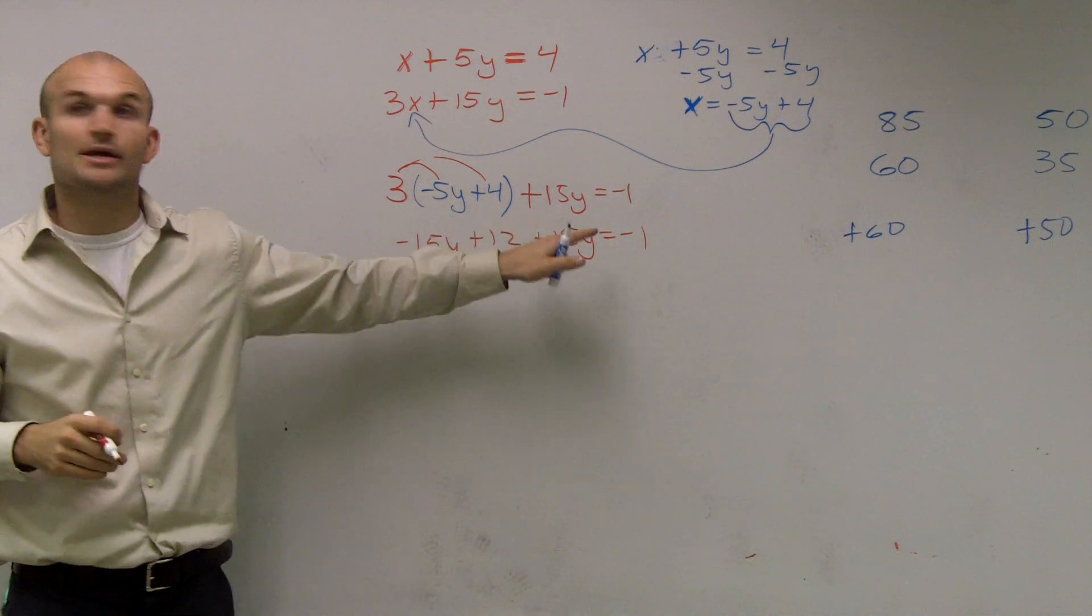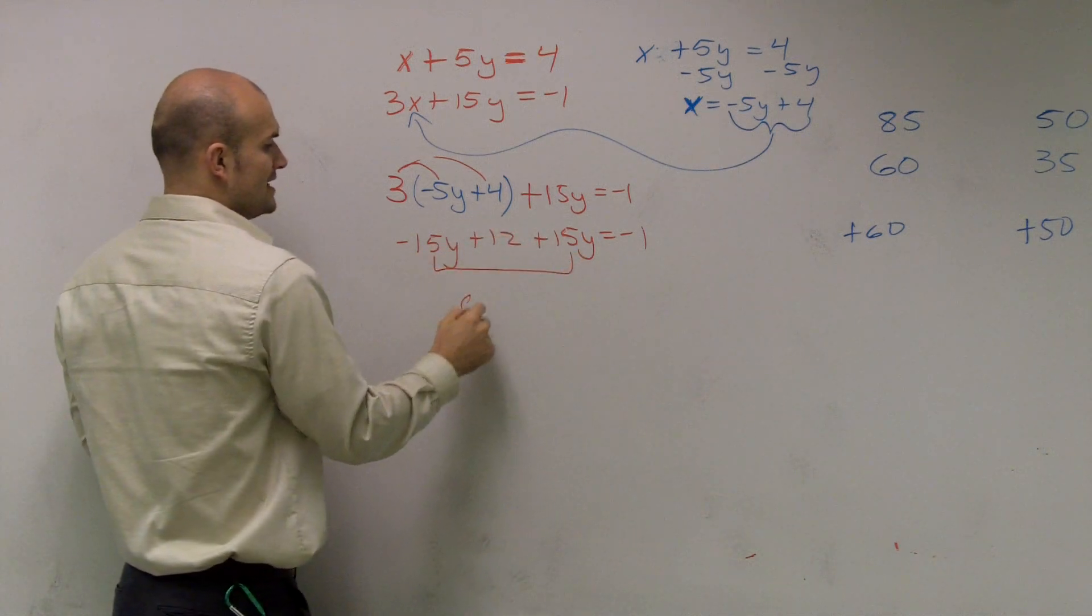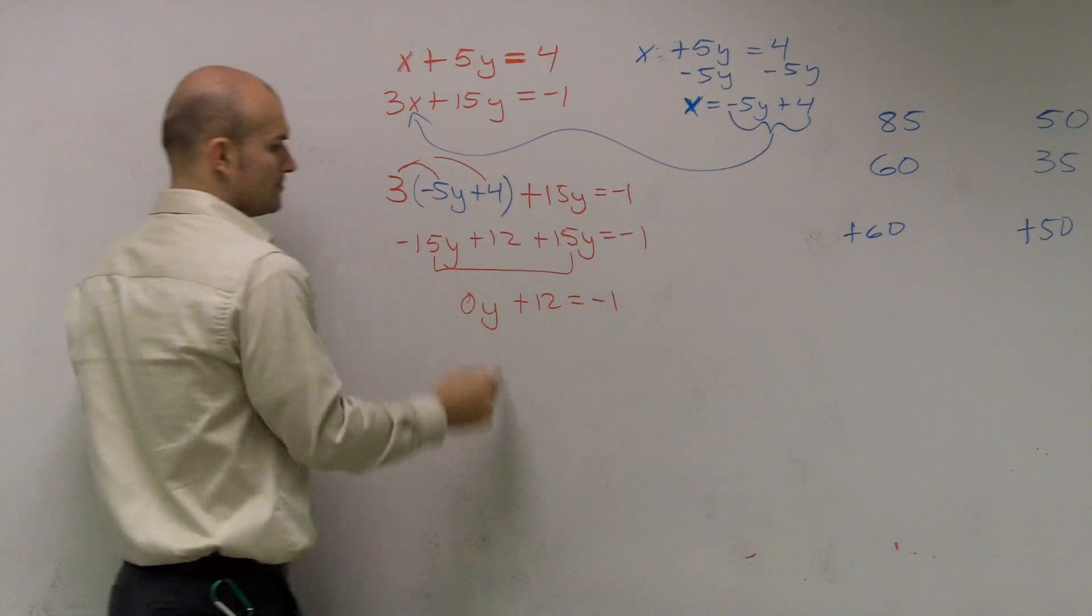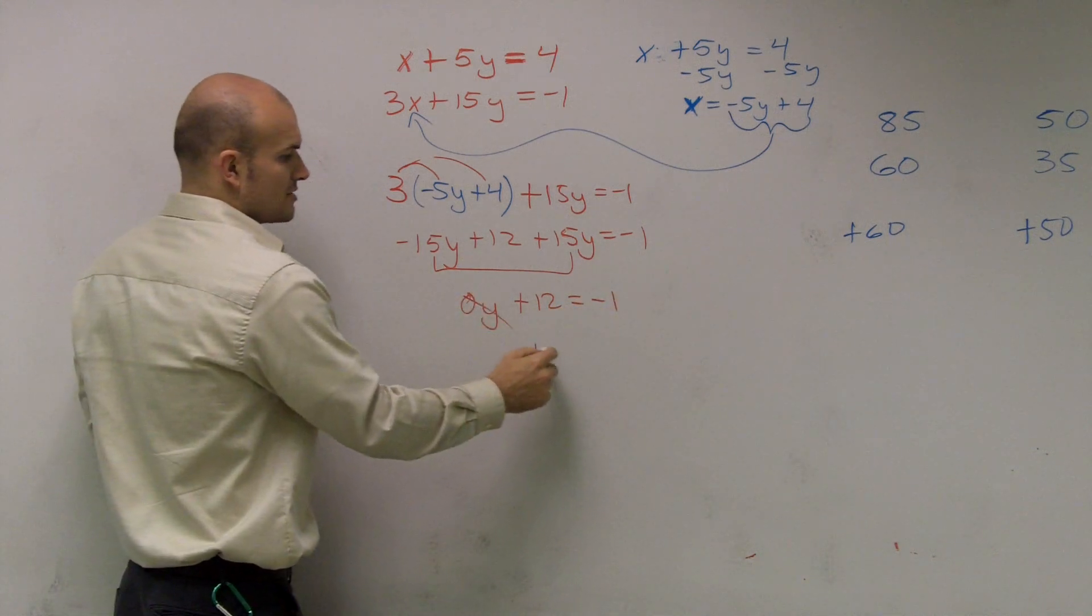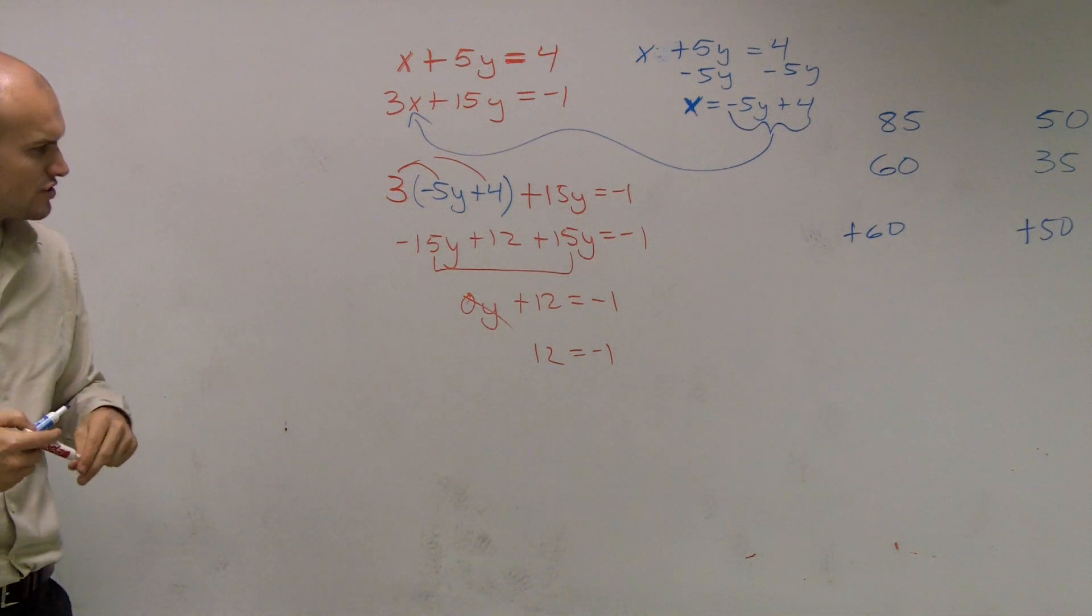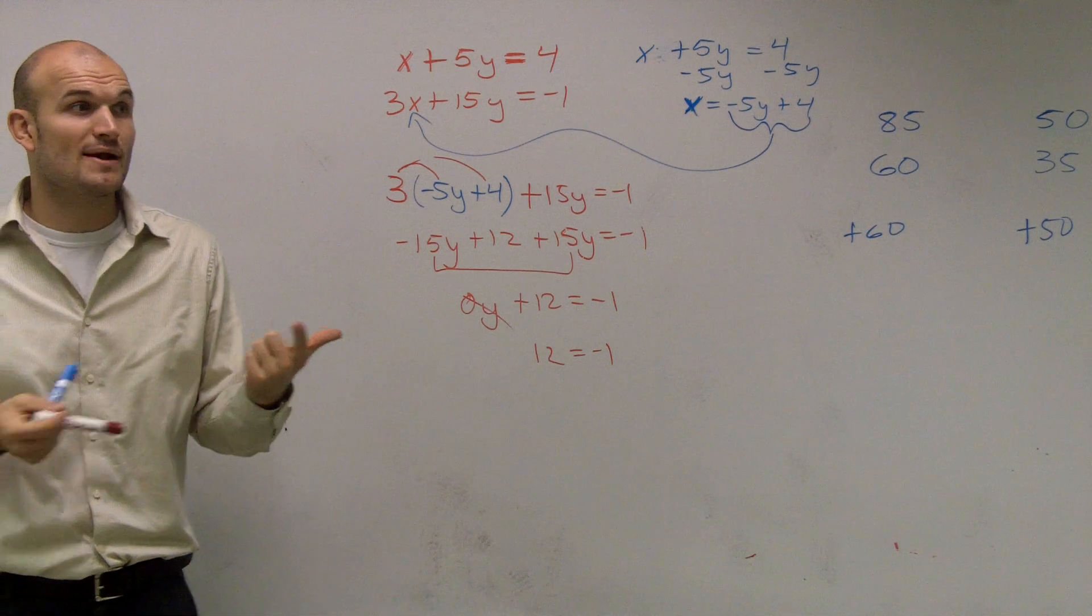Now, we can combine our like terms. So, I have negative 15y plus 15y. That's going to equal 0y plus 12 equals negative 1. I don't have any y there. So, my final answer I get is 12 equals negative 1. I have nothing to solve for, right? I can't find the x or I can't find the y.